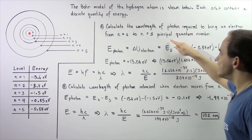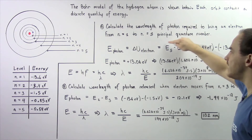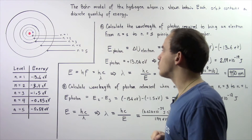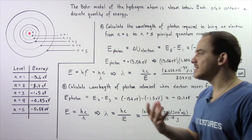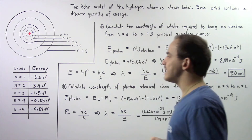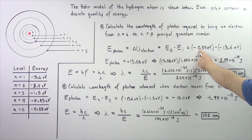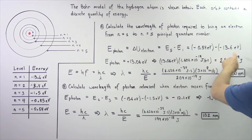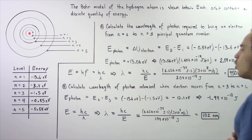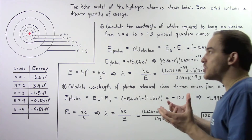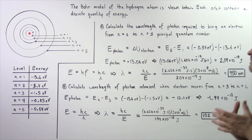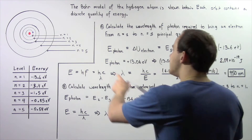That is given by taking E5 and subtracting E1, where E5 is the quantity of energy the electron has at the fifth principal quantum number, and E1 is the quantity of energy the electron has when it is at the ground state n equals 1. So negative 0.54 electron volts minus negative 13.6 electron volts gives us a positive value — the energy that electron has to gain to go from n equals 1 to n equals 5, and that's how much energy that photon has to have.